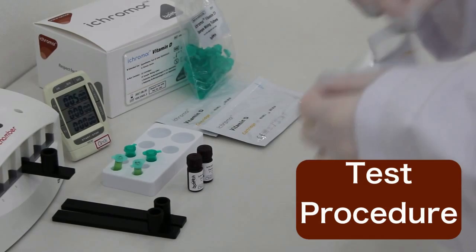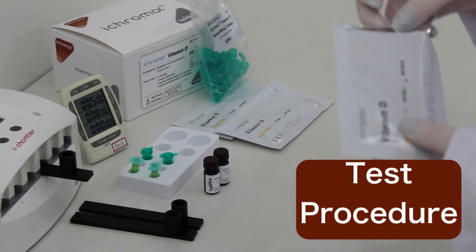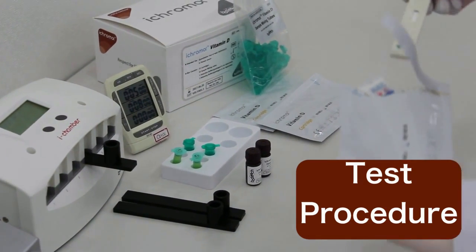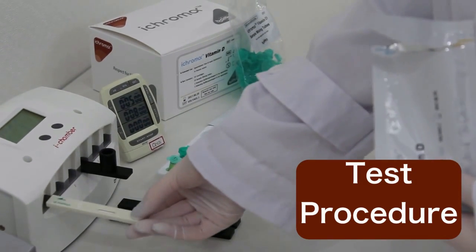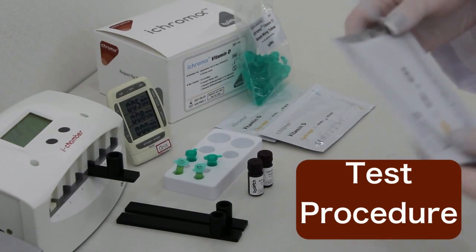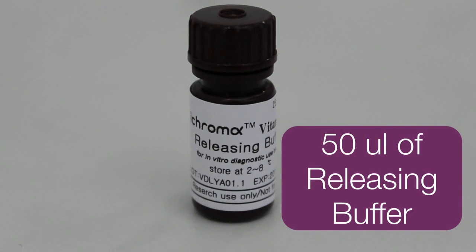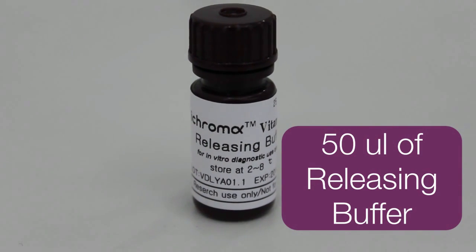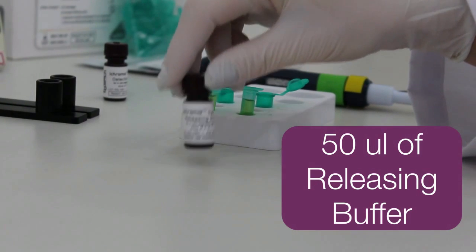Now, let's do the test procedure. Put the test cartridge into the iChamber slot. Transfer 50 microliters of releasing buffer into the sample mixing tube.